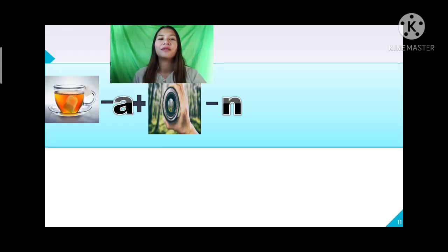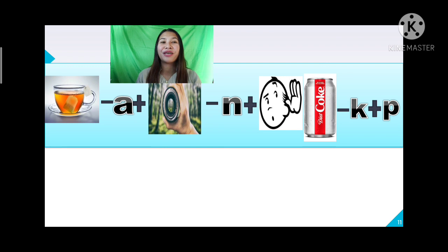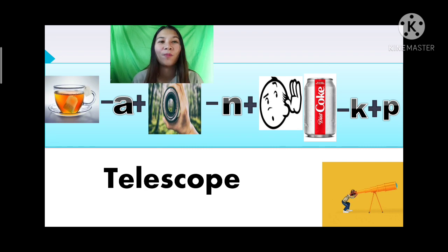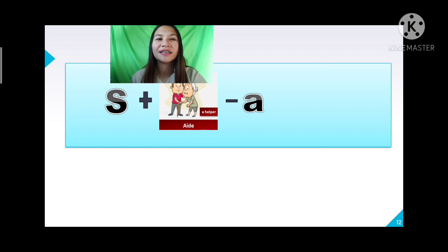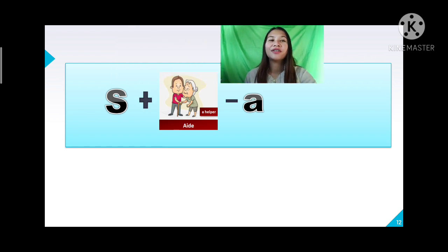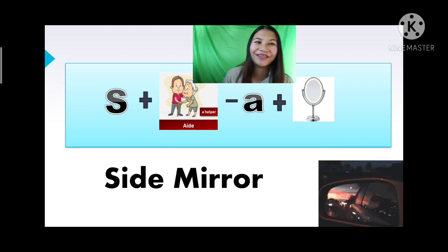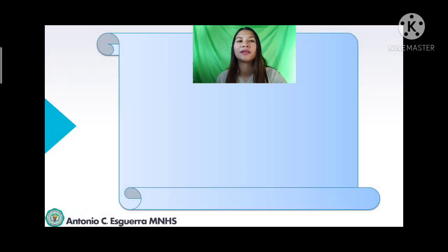Next word: the picture minus L plus the picture minus N, sounds like 'cope' minus K plus P — it is a telescope! And our last word: S plus the picture minus A plus the picture — it is side mirror. Who got all five correct answers? Very good — congratulations!